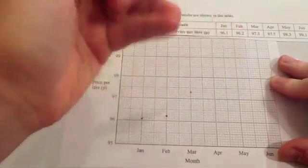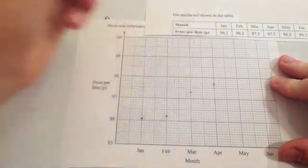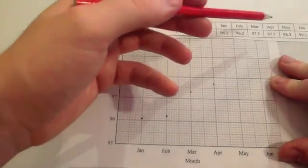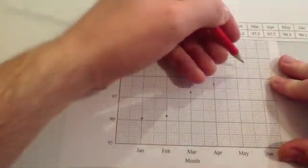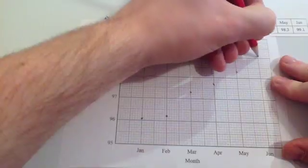April, 97.7. So 97.7. May, 98.3. So 98.3. And finally June, 99.1. So June, 99.1.